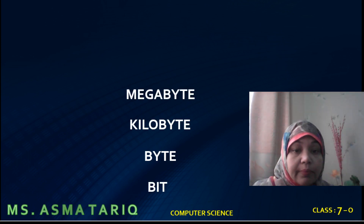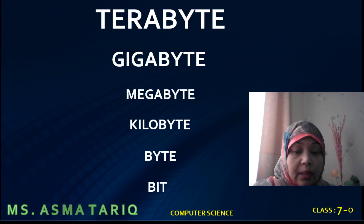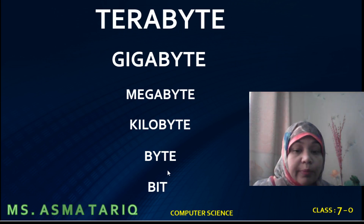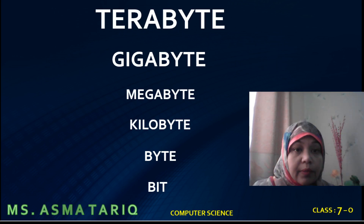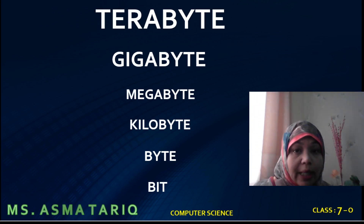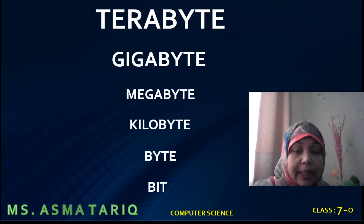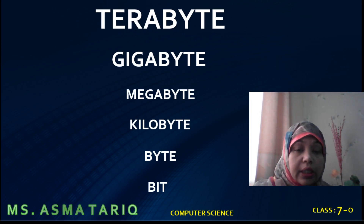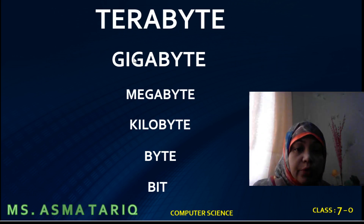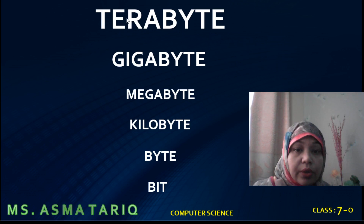Let's recap: bits, bytes, kilobytes, megabytes, gigabytes, and terabytes. Bit is the smallest unit, and the combination of eight bits represents one byte, which represents one character in the computer's memory. 1024 bytes equals one kilobyte. 1024 kilobytes equals one megabyte. 1024 megabytes equals one gigabyte (GB). And 1024 gigabytes equals one terabyte (TB).